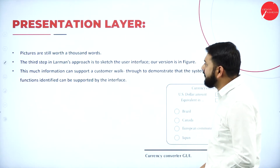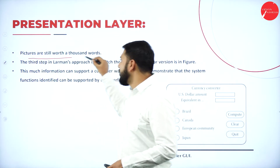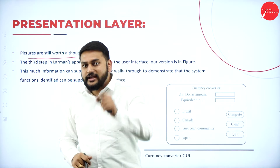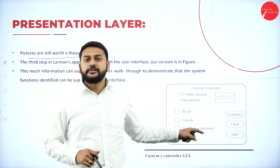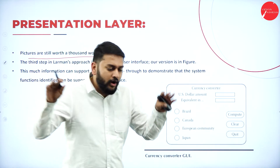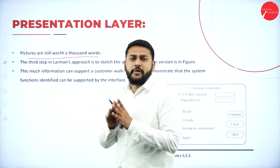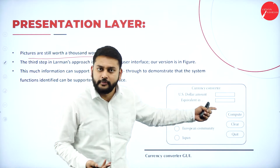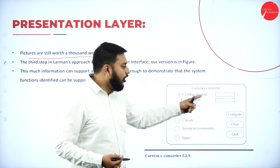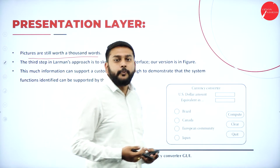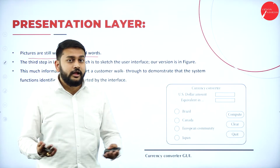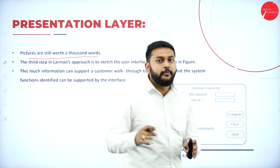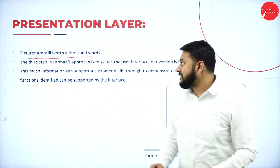Moving forward to the presentation layer: people say pictures are worth 1000 words — a picture will explain the concept very clearly. Here I have the picture of the system. Looking at the system, you will understand the complete working style and system functions much better. We have a text box for the US dollar amount, radio buttons to select the equivalent country, and three buttons: compute, clear, and quit. Pressing compute automatically calculates the amount. This speaks very well about the system function.